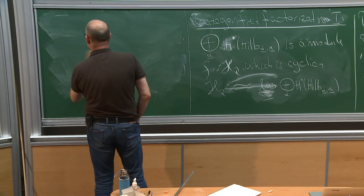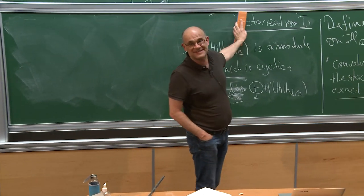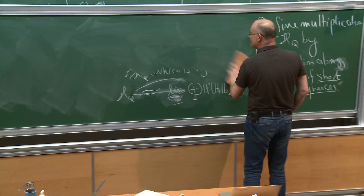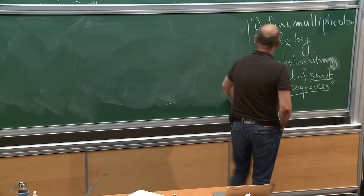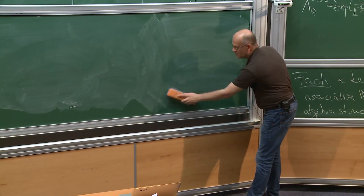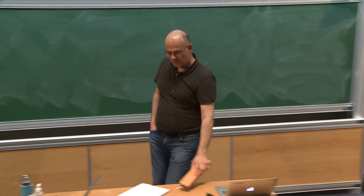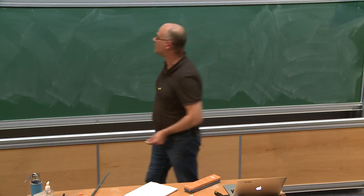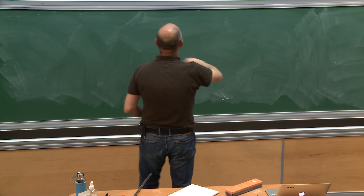We will now categorify our standard examples. Example 1: the trivial quiver. Example 2: the one-loop quiver. And then the Kronecker quiver, where we will see the full power of factorizations two and three.